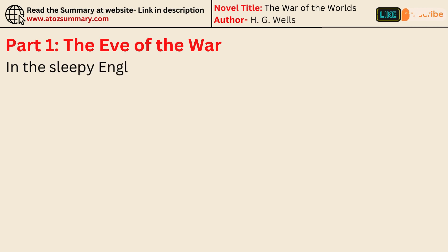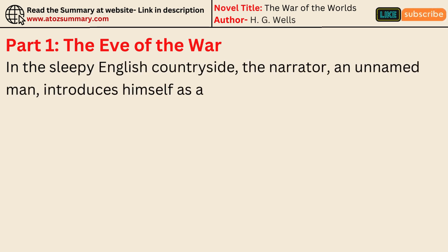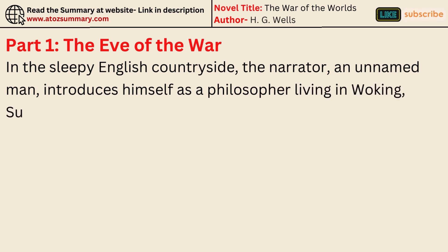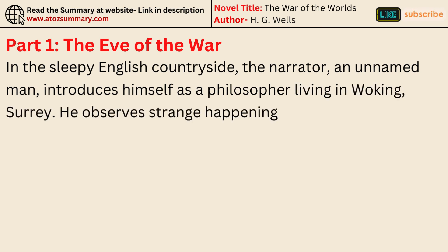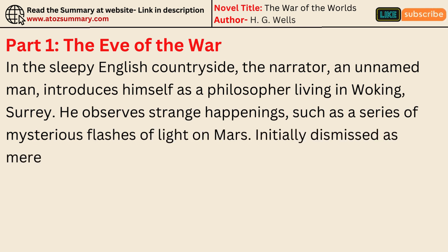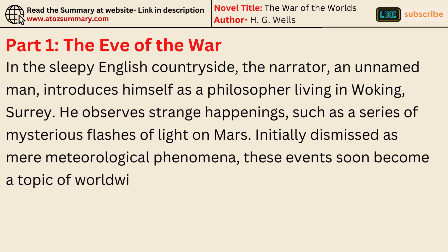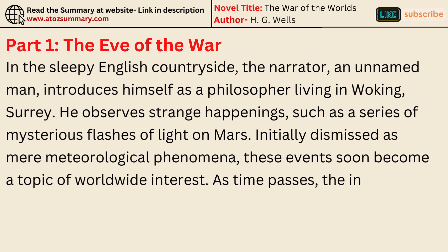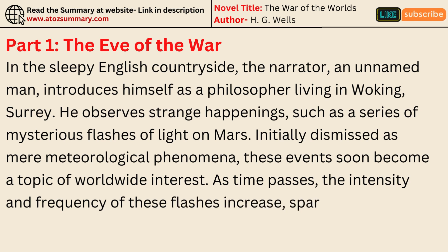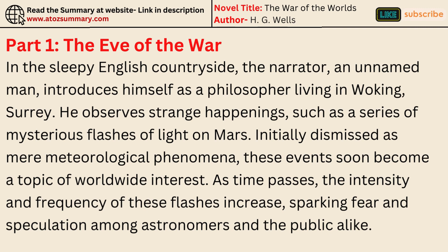In the sleepy English countryside, the narrator, an unnamed man, introduces himself as a philosopher living in Woking, Surrey. He observes strange happenings, such as a series of mysterious flashes of light on Mars. Initially dismissed as mere meteorological phenomena, these events soon become a topic of worldwide interest. As time passes, the intensity and frequency of these flashes increase, sparking fear and speculation among astronomers and the public alike.